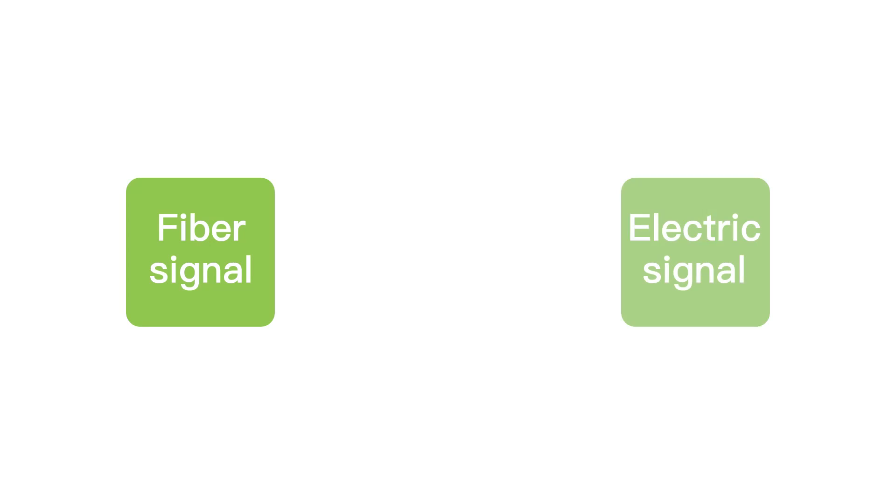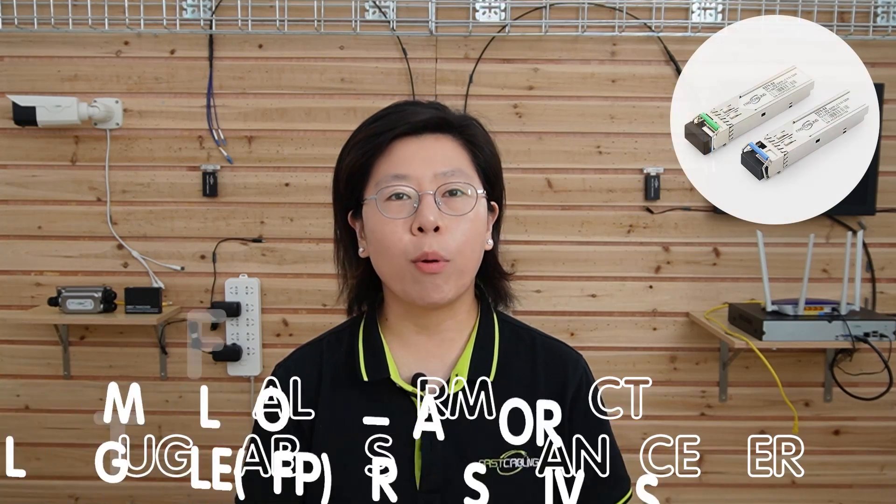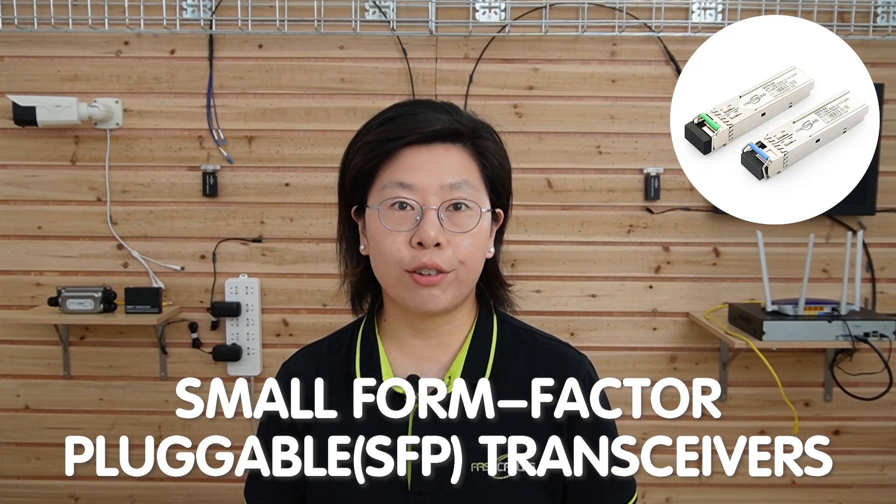A comprehensive fiber optic system involves various essential components. The primary element is the fiber optic cables themselves. Fiber media converters play a crucial role in converting electrical signals to fiber optic signals, facilitating seamless communication between fiber and copper networks. Small form-factor pluggable SFP transceivers act as interchangeable devices, allowing different types of data connections. These components, along with connectors and ethernet cables, collectively form a robust fiber optic infrastructure enabling efficient data transmission in modern networks.